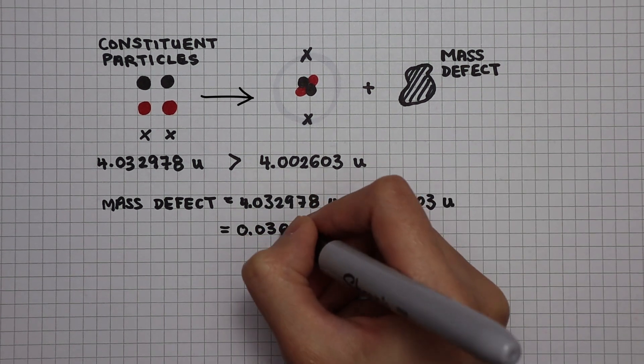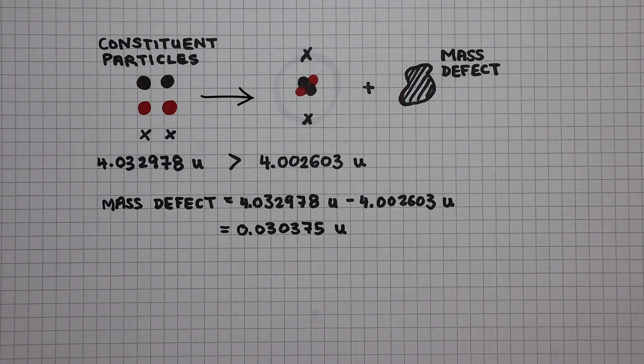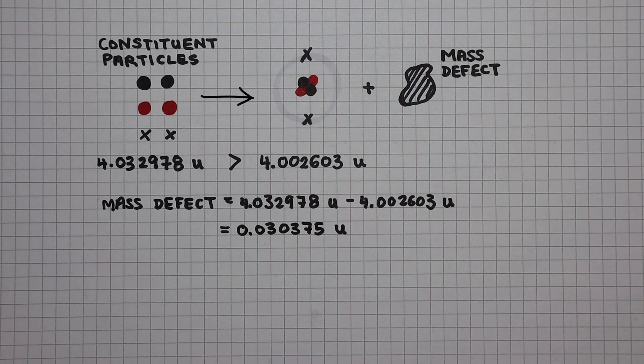Giving me 0.030375u. How do we lose this chunk of mass in the process of creating this helium?